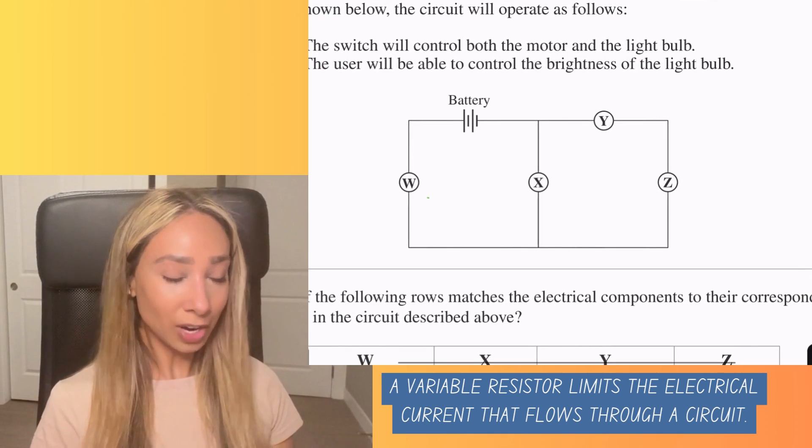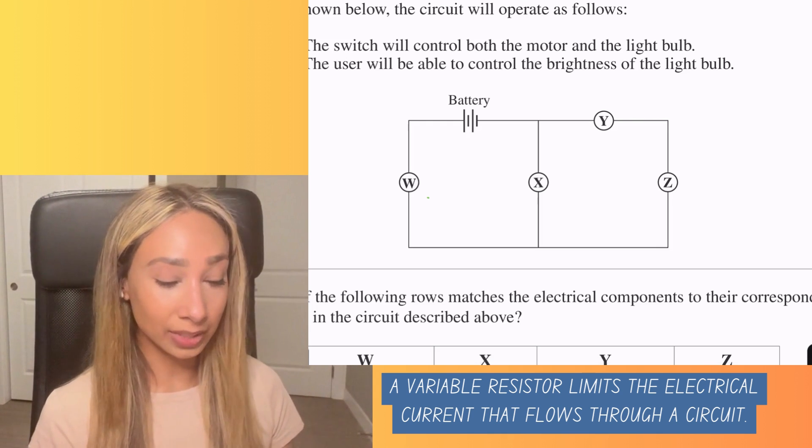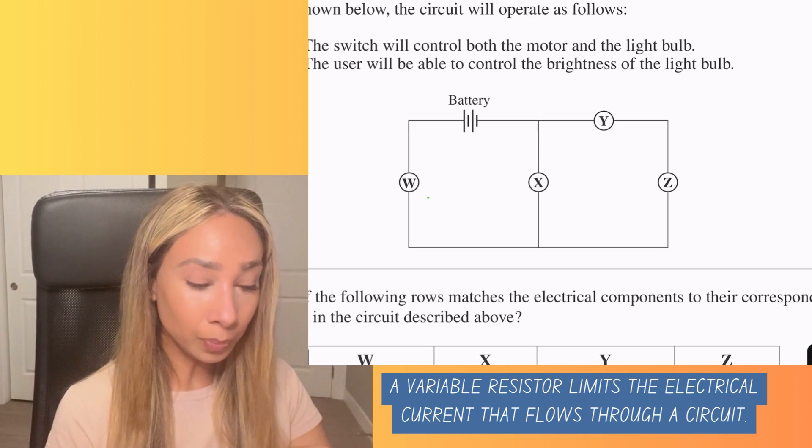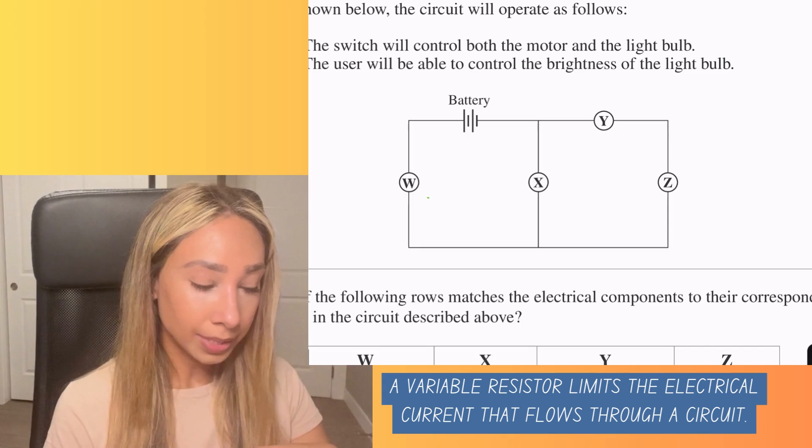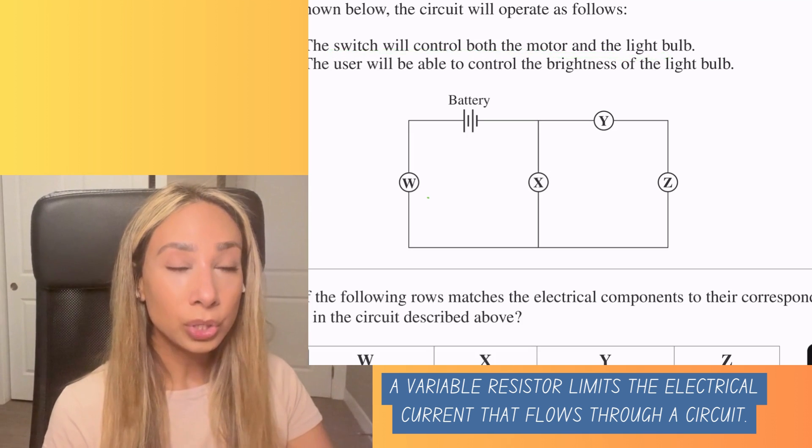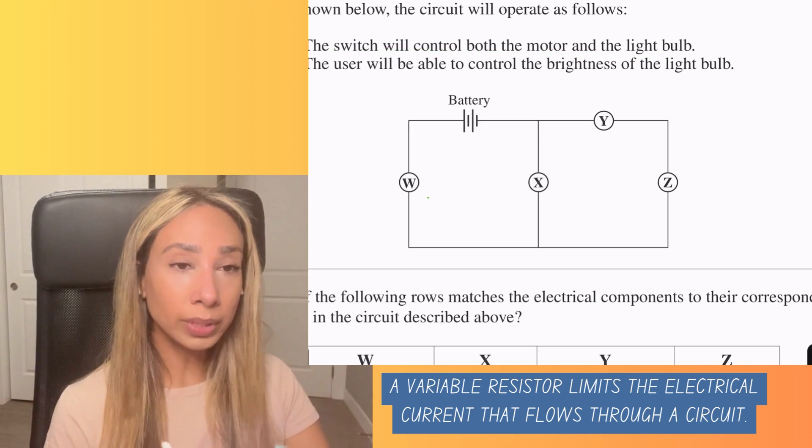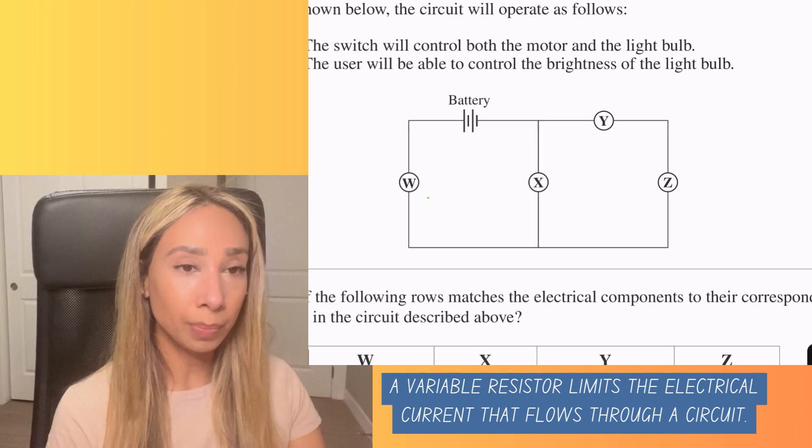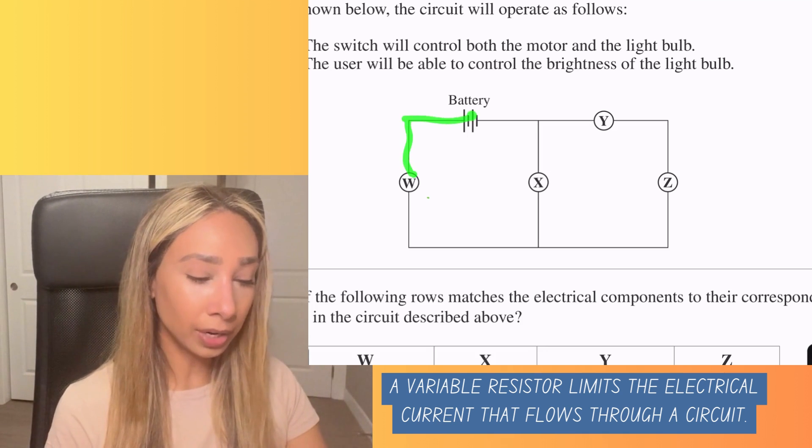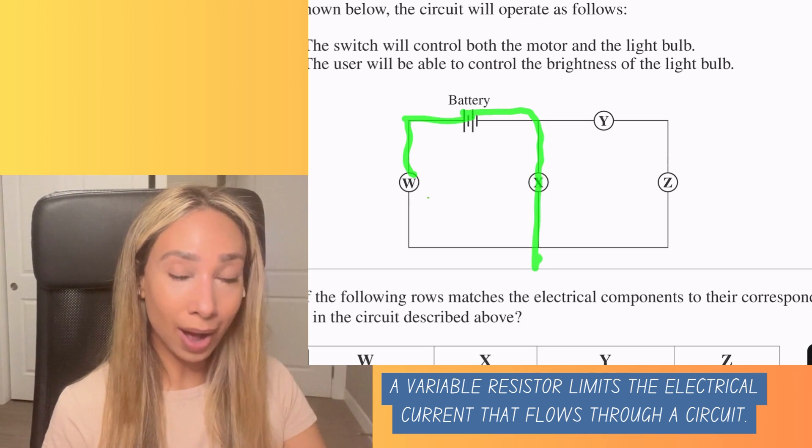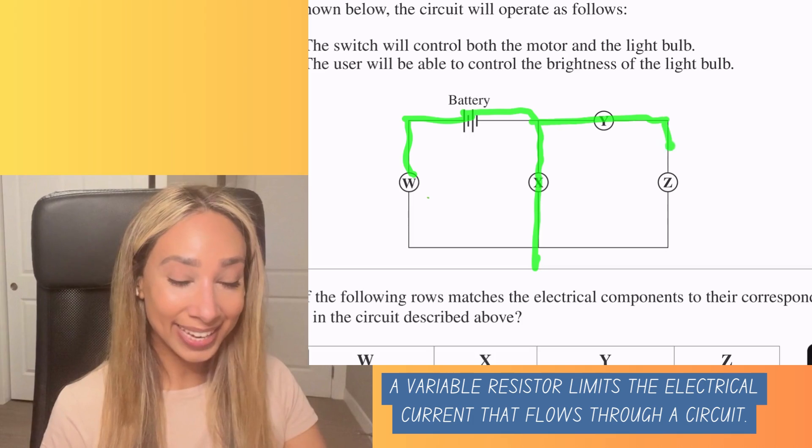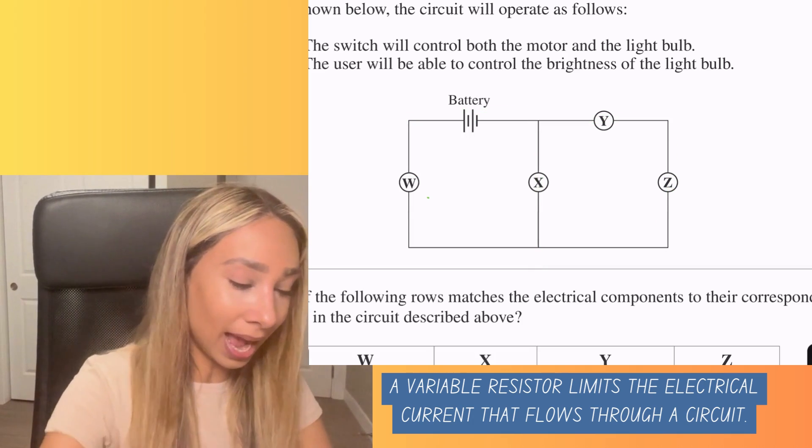So our circuit is set up in a series, which means we're going to need the switch to control both the motor and the light bulb. For this to work, the only option that can work is placing the switch at item W. And that's because the switch has to turn on and allow the current to flow through the battery, which will then allow the flow of the current to go to X and the last two here. So this would have to be our switch.